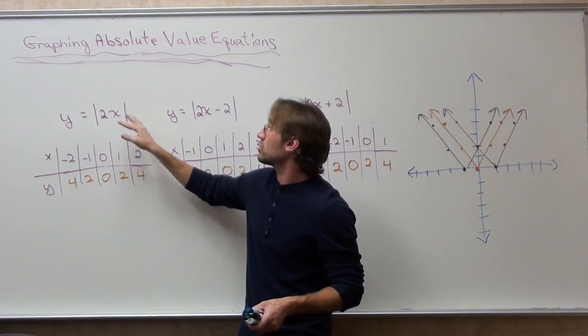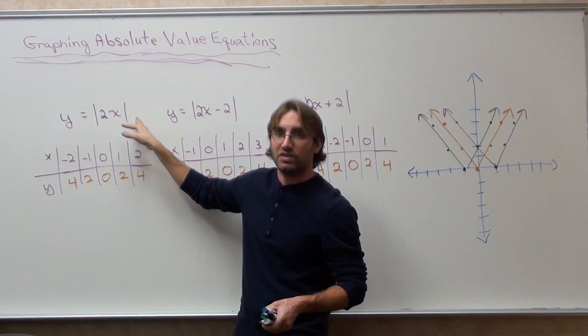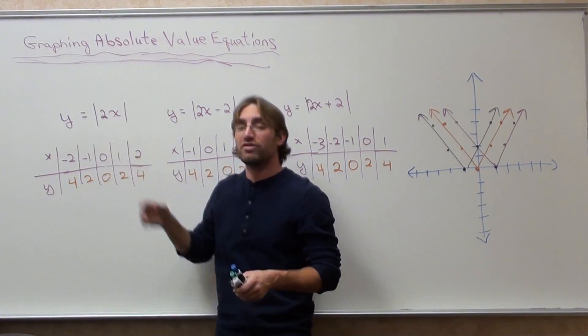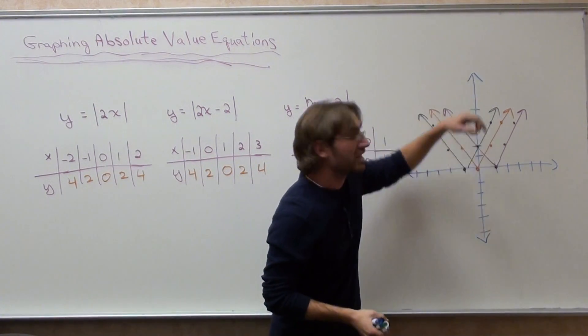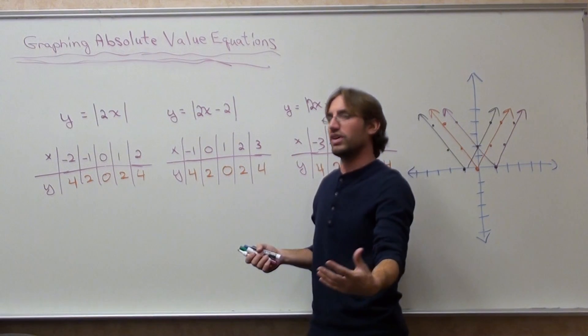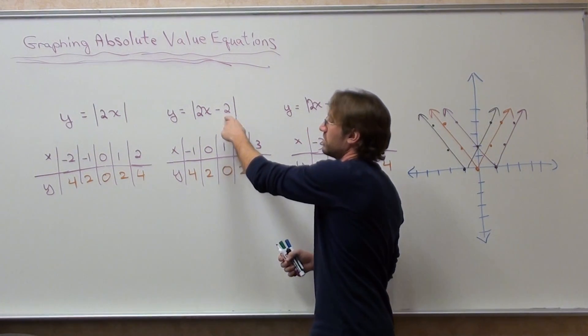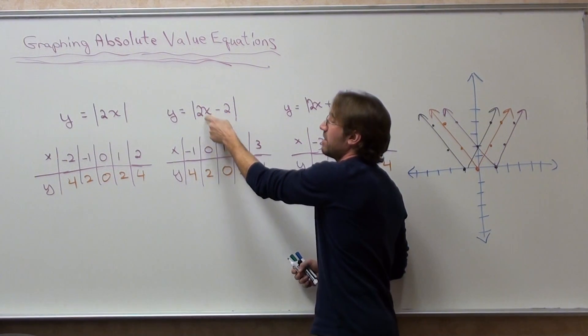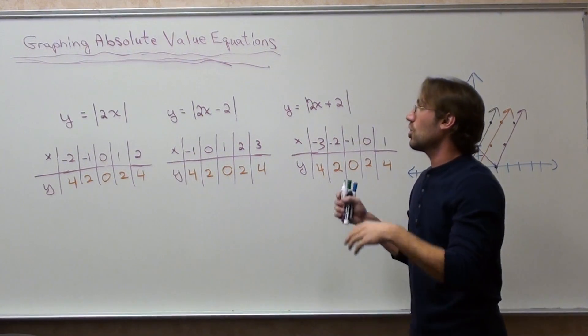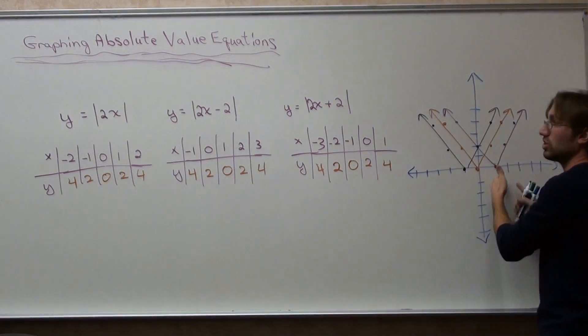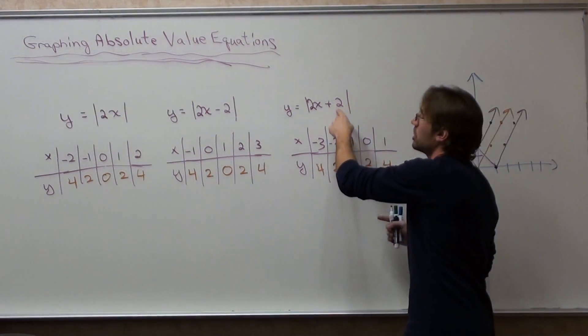This isn't going to shift at all because there's no number that you're adding or subtracting after the x. But because you put a two in front of it, it's going to raise higher than it did in the previous example, just the absolute value of x. This one's going to shift the opposite of this value divided by the number in front of x. So it shifts one, and it shifts one to the right, and this one's going to shift one to the left.